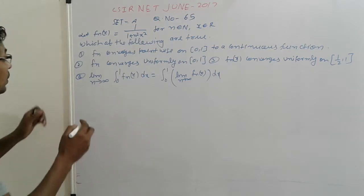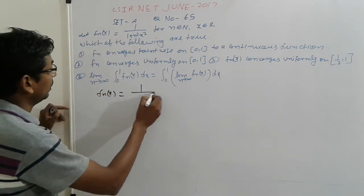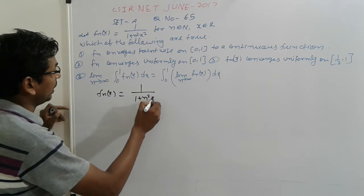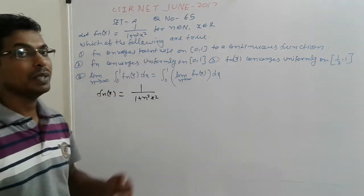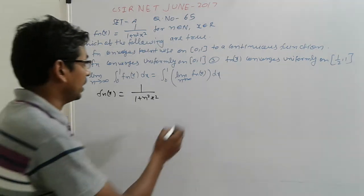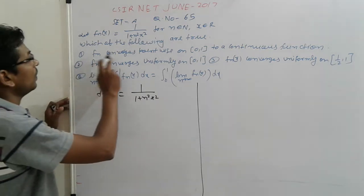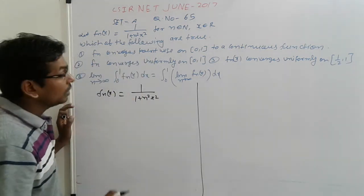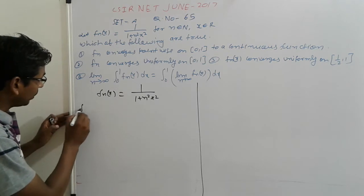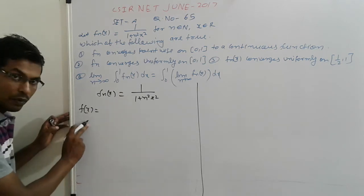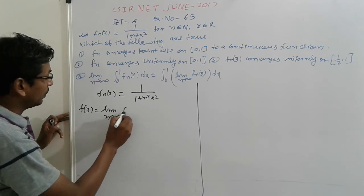Come to this problem. The function f_n(x) is given as n divided by 1 plus n squared x squared. You are taking the statements one by one and checking which answer is correct. First, f_n(x) is pointwise convergent on [0,1] to a continuous function. So check out this pointwise convergence — find out f(x) = limit as n tends to infinity of f_n(x).